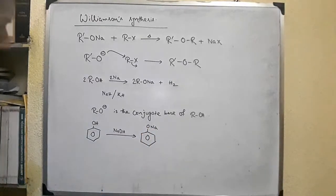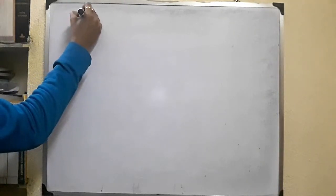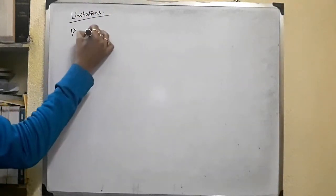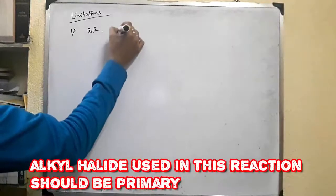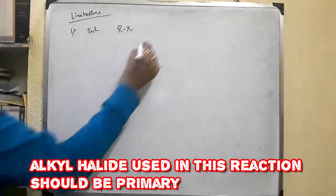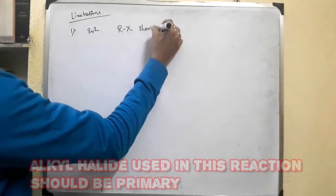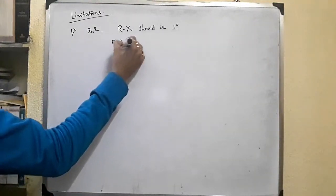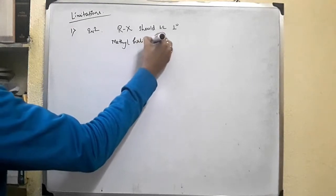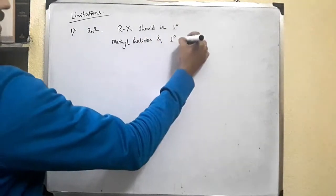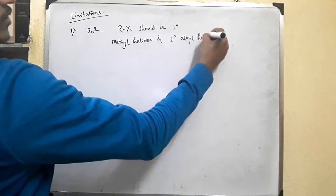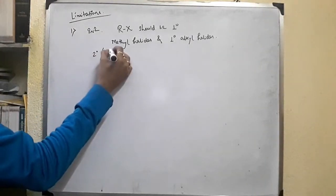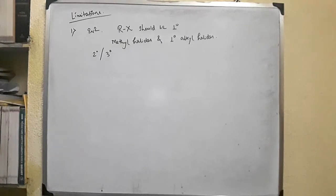The limitations of this method: since the reaction follows SN2 mechanism, the alkyl halide used should be primary. Methyl halides and primary alkyl halides are most reactive in SN2 reactions. If we use secondary or tertiary alkyl halides, instead of ether we get alkenes.